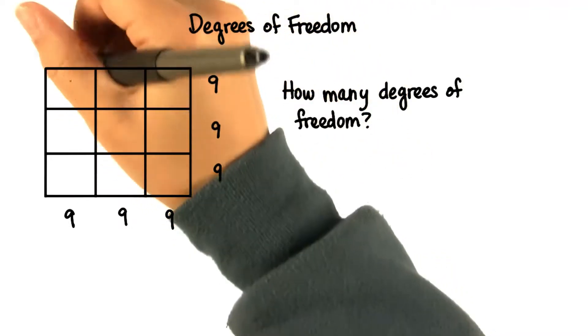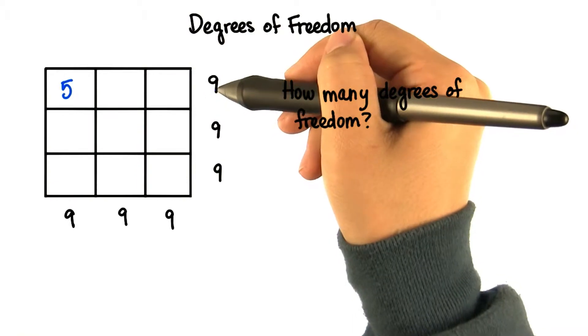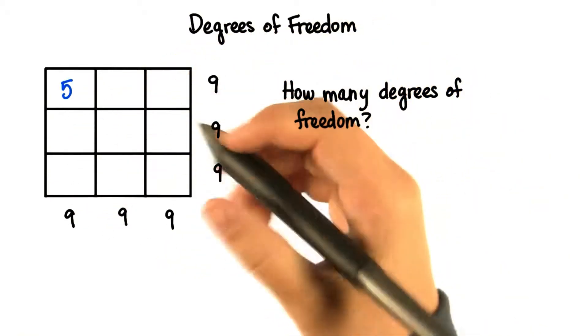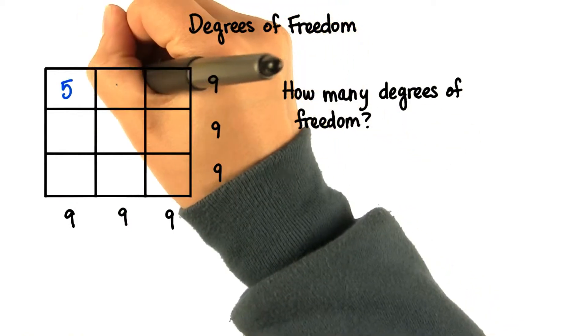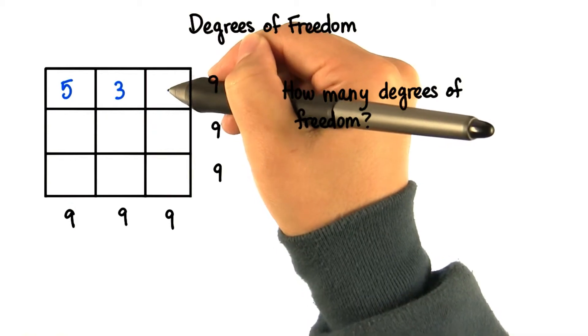Let's pick any number in here. Let's say 5. Can we choose this number and still have this sum to 9 and still have these columns sum to 9? Yeah. Let's say 3. So together those make 8, and that means this one is forced. It has to be 1.